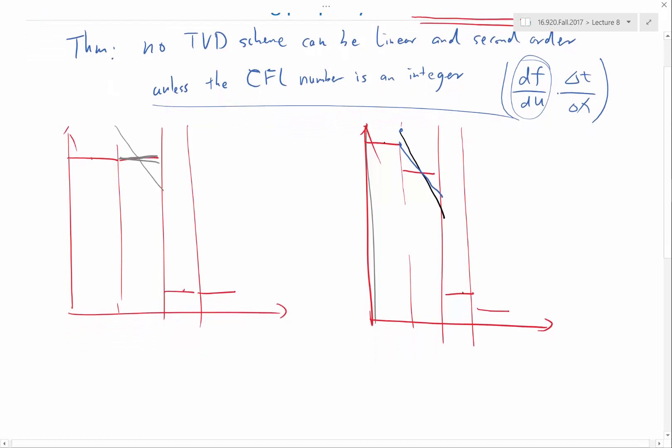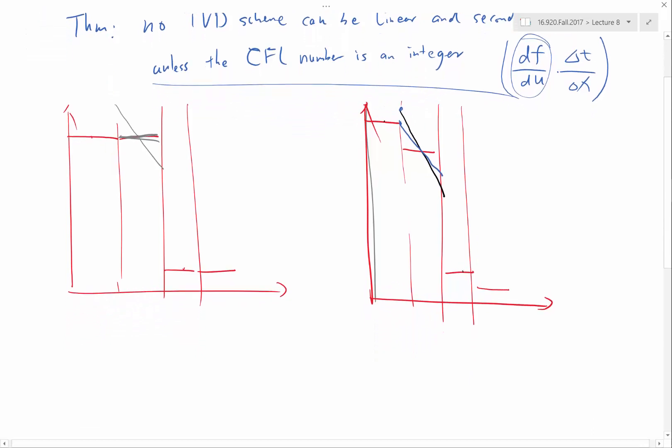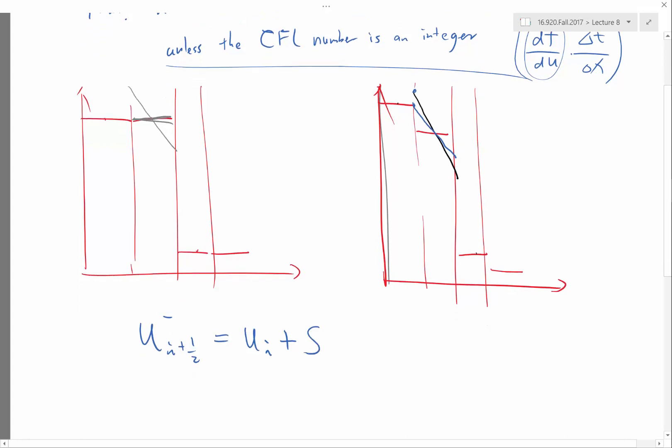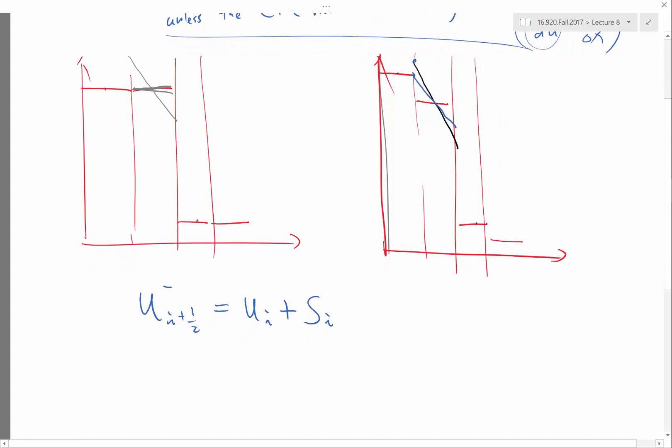So the limiter works like this. So my u_{i+1/2}^- is usually constructed from the cell at the left. So u_i plus a slope at the cell i. And the limiter says that, okay,